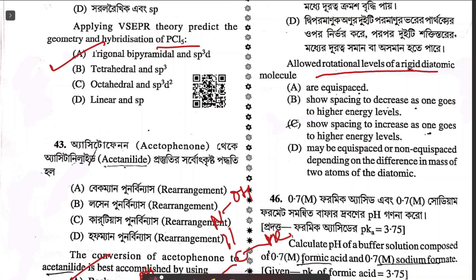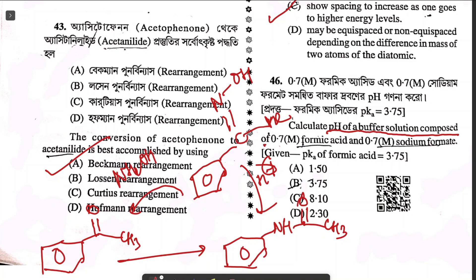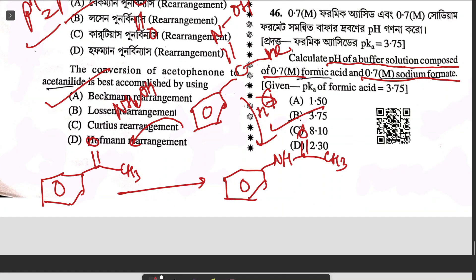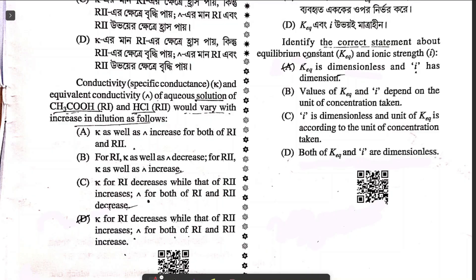Question forty-five: allowed rotational levels of rigid diatomic molecules have spacing 2B, 4B, 6B — spacing increases at higher levels — option C. Question forty-six: pH of a buffer with 0.7 M formic acid and 0.7 M sodium formate. By Henderson-Hasselbalch: pH = pKa + log([salt]/[acid]). Since concentrations are equal, log term = 0, so pH = pKa — answer B. Question forty-seven: equivalent conductance of acetic acid and HCl both increase with dilution, but specific conductance decreases with dilution — answer B.